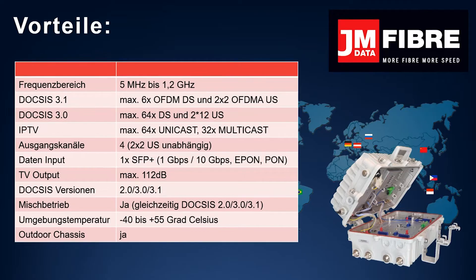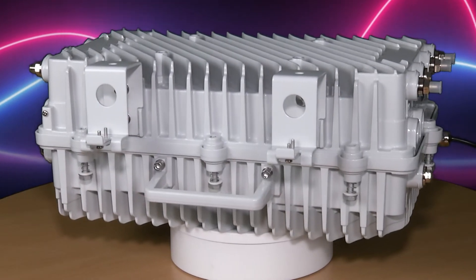And now, here are the specifications. The frequency range is 5 MHz to 1.2 GHz. This product can handle DOCSIS 3.1 with 6x OFDM and 2x2 OFDMA channels, as well as up to 64 DOCSIS 3.0 downstream channels and 2x12 upstream channels, 64 unicast and 32 multicast IP TV channels, 4 independent output channels, 1 SFP plus optical input for 1 Gigabit, 10 Gigabit and X-PON connections. TV output level 112 dB. DOCSIS versions 2.0, 3.0, 3.1. Mixed operation incorporating DOCSIS 3.1 and DOCSIS 3.0 and 2.0. Ambient temperature conditions minus 40 to 55 degrees Celsius. Outdoor chassis.